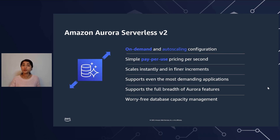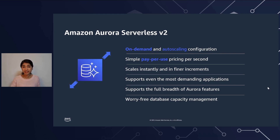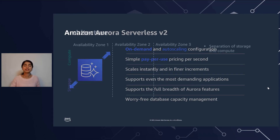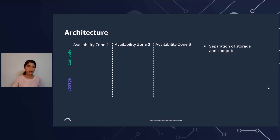So you only pay for what you're using. It scales instantly and makes sure that it follows your workload closely, so you're not paying for anything additional. It supports even your most demanding business-critical production workloads where you require high scale and high availability, as well as your development and test environments. Aurora Serverless V2 also supports the full breadth of Aurora features. Now let's talk about some of the key concepts, starting off with the architecture.